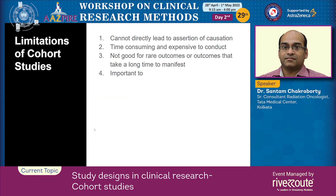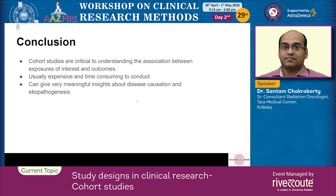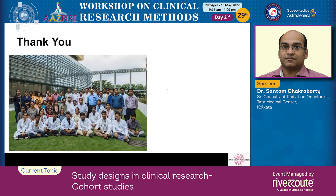Finally, the limitations: cohort studies cannot directly establish causation. They are time-consuming and expensive to conduct. They are not good for rare outcomes or outcomes that take a very long period to manifest. However, if you want to determine the association between an exposure and outcome, calculate incidence, or calculate relative risk, cohort studies are the only way to go. Although expensive and time-consuming, they give very meaningful insights into disease progression and pathogenesis. Thank you.